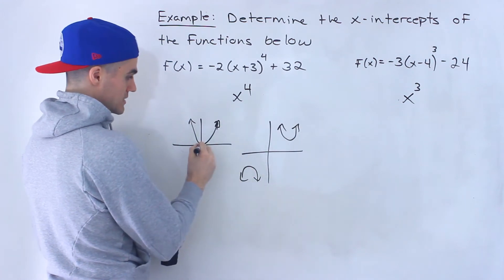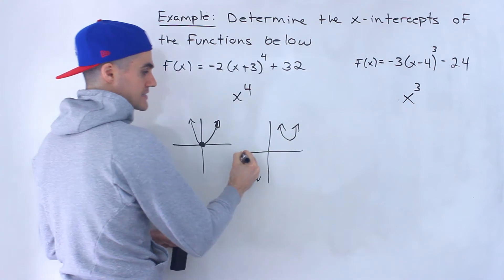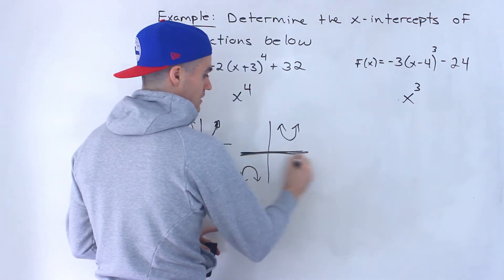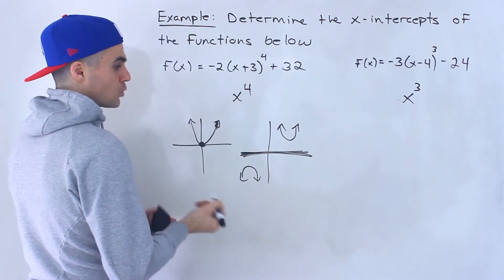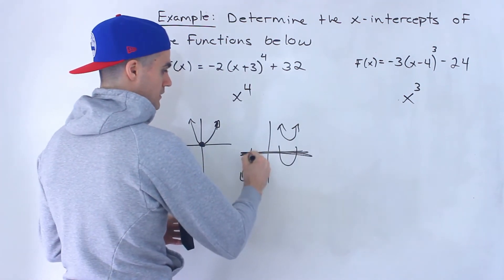So even over here or if we shift it left or right and it stays, the vertex stays on the x-axis. Or we can get two x-intercepts. So something like this or something like that.